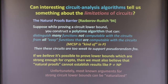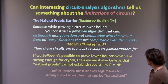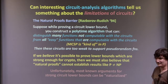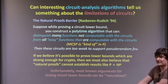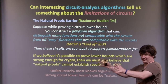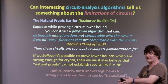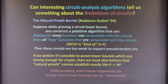In natural proofs terminology, you have some property of Boolean functions that is constructive (there's a poly-time algorithm), it's large (it holds for many functions), and useful (it distinguishes hard functions from easy ones). Many circuit lower bounds are proved this way, perhaps implicitly, which means they're too weak to prove strong enough lower bounds against circuits supporting cryptography.